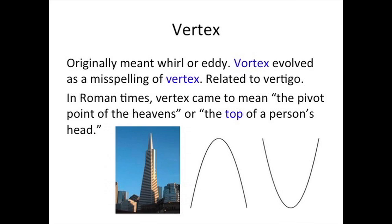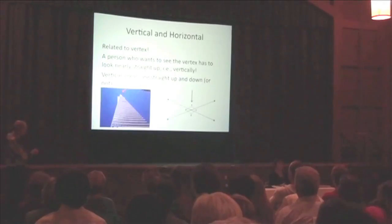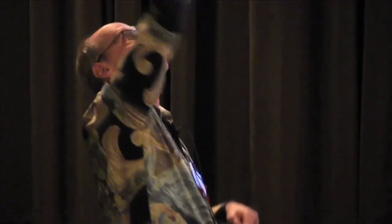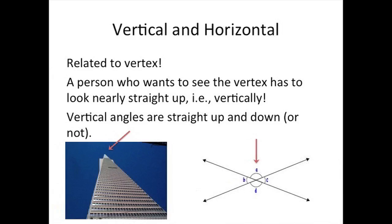Vertex — this is fascinating. It originally meant whirl or eddy. Vertex is a mispronunciation. Then the vertex became the pivot point of the heavens, so it's the top of the parabola or the bottom. Here's looking up at the Transamerica Pyramid — when you look up at the vertex, you're vertical. That's where the word vertical comes from.